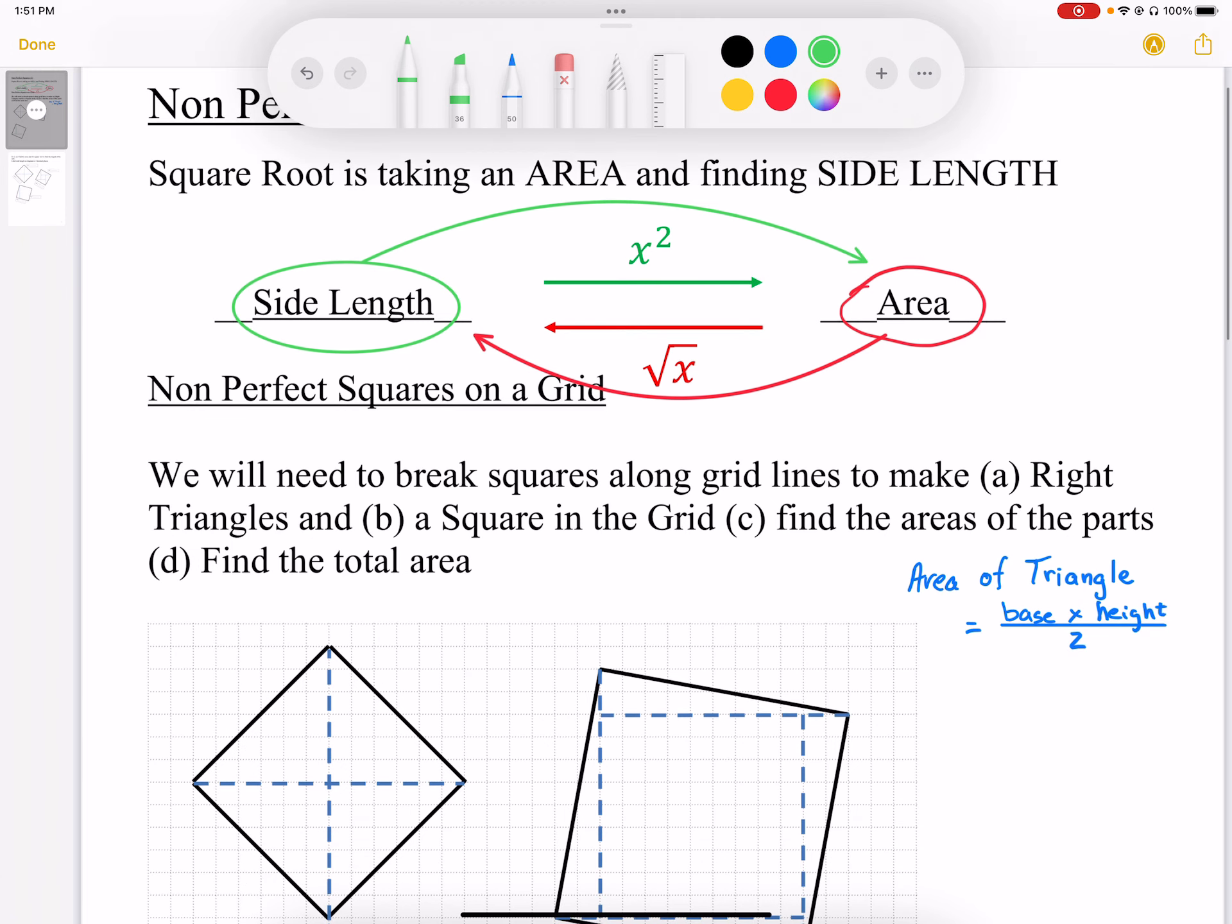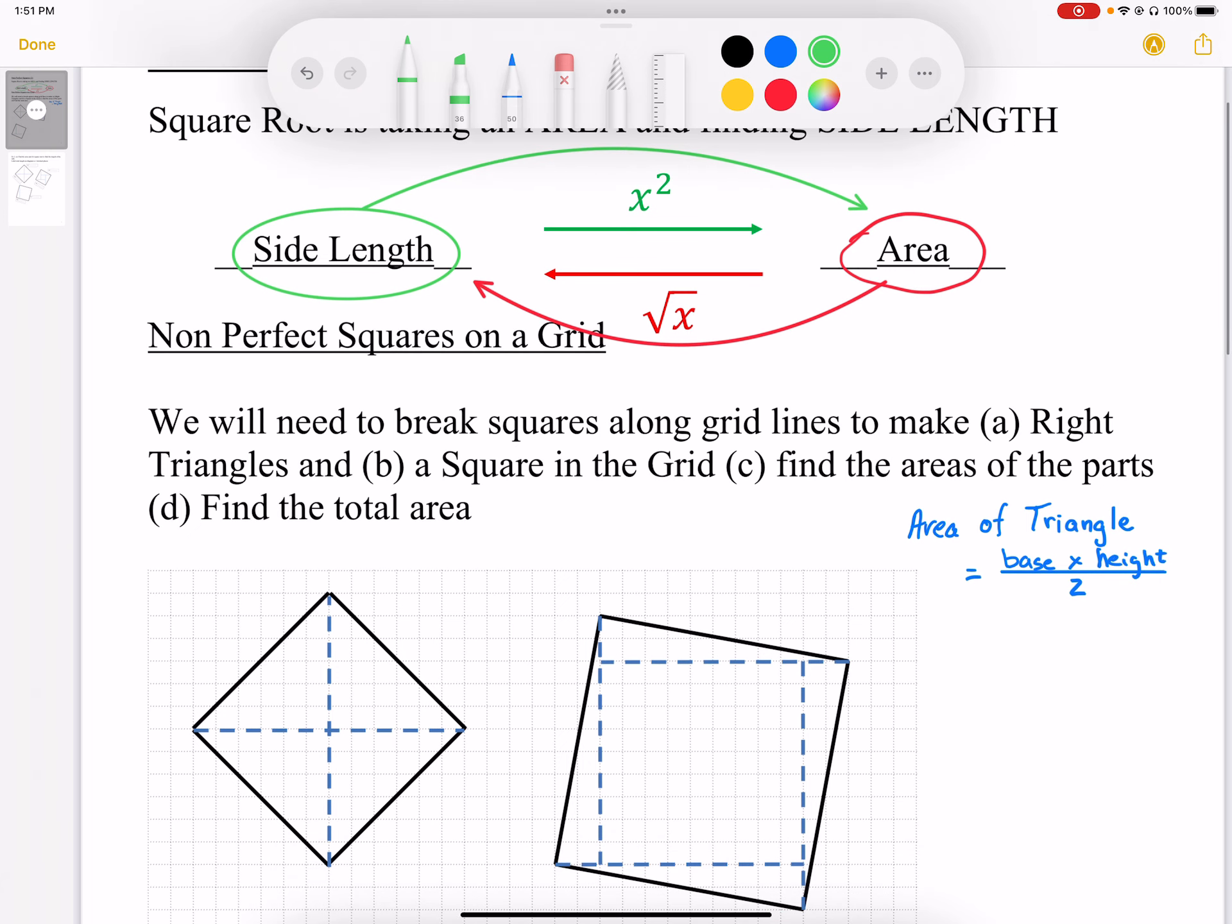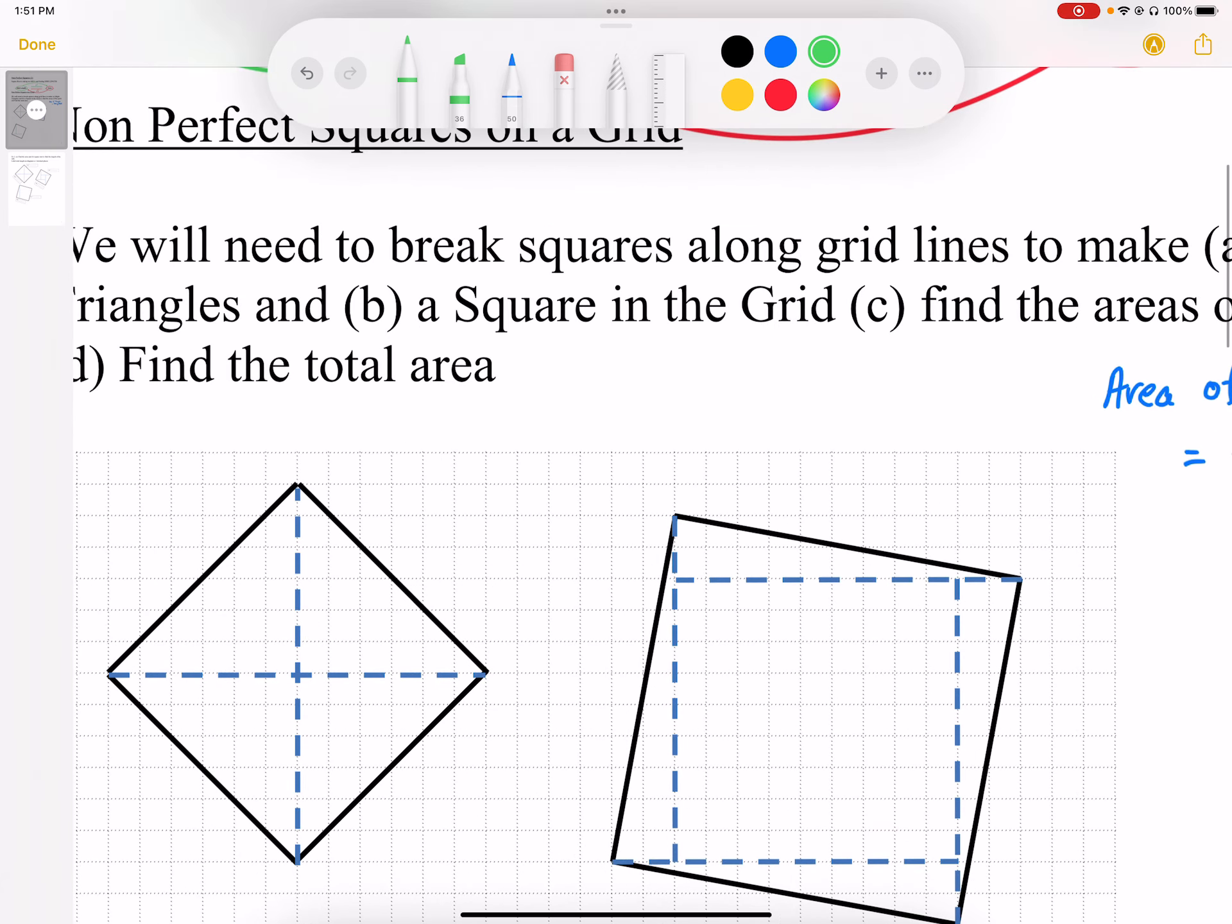What we're going to do is look at non-perfect squares on a grid. Normally, if we draw squares nicely lined up with the grid lines, we can make our perfect square squares. For example, 2 squared is 4. We can make a nice, perfect square like that.